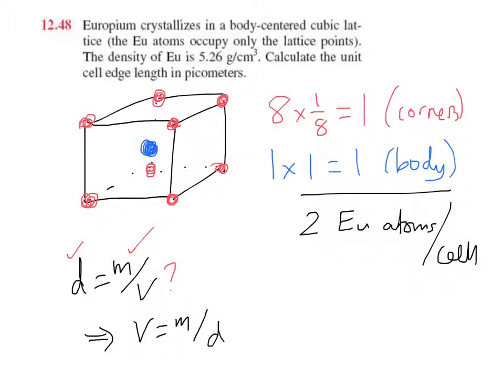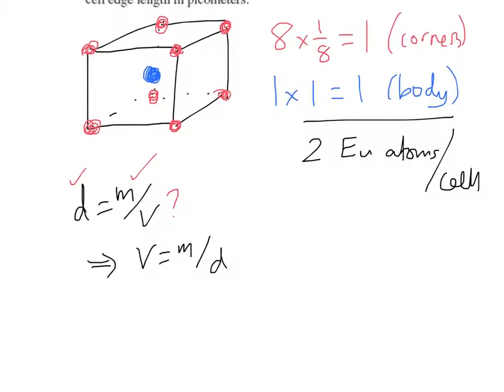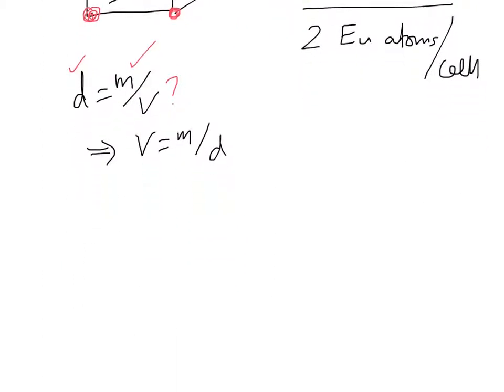We're told the density. We better calculate the mass now. So we've got two atoms of europium, and we need to find the mass. So the first thing to do is find europium on the periodic table. It's pretty close to the bottom. It's in the inner transition metals, element 63. And average atomic mass, 152.